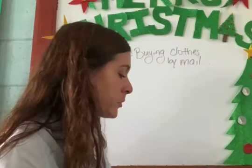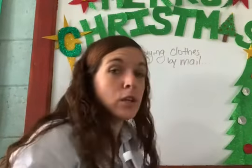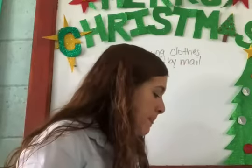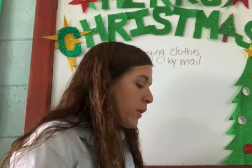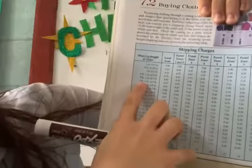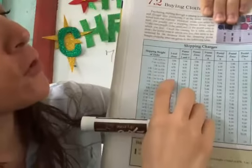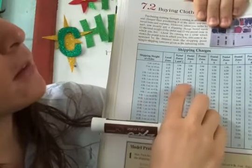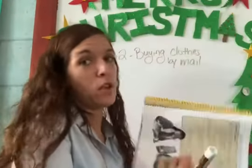Look at model column number one. Mrs. Peck lives in postal zone three. This is literally no math — you just have to follow the table. She ordered clothing that weighs a total of four pounds, three ounces. Find the shipping charge. So you go over to the weight right here. It's four pounds, three ounces, so that's going to be this row: four pounds, one ounce to five pounds. And then you go over to postal zone three. $4.96 is going to be her shipping charge. That's all you do for model column number one.